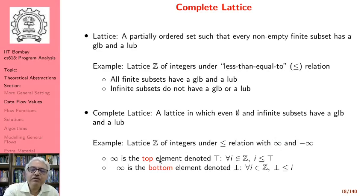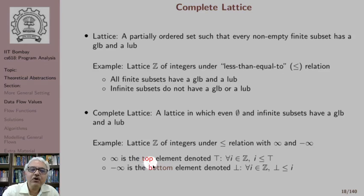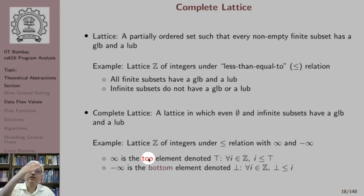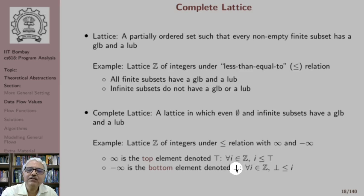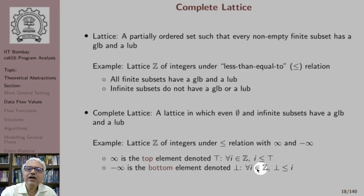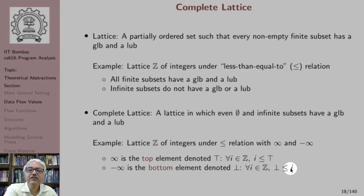We define two important elements in a lattice: the top element and the bottom element. The top element occupies the top position in the lattice — it is denoted by the symbol ⊤ (resembling T) — and every element is weaker than the top element. The bottom element is denoted by ⊥ (T turned upside down), and the bottom element is weaker than every element. These two form very useful elements in our scheme of things.